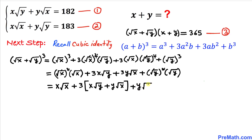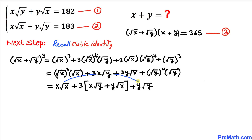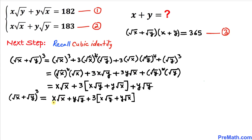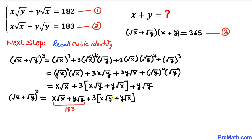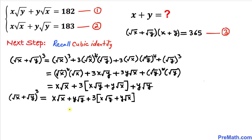Rearranging the terms, we group x√x and y√y together, and x√y and y√x together. The first group matches equation 2 which equals 183, and inside the bracket we recognize equation 1 which equals 182. So we factor out 3 and substitute those values.